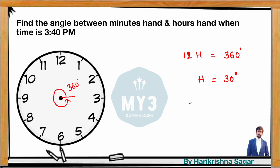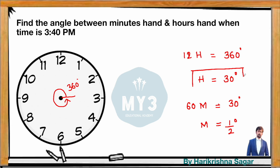One hour equals 60 minutes, so 60 minutes makes 30 degrees. Therefore, 1 minute makes 30/60 = half a degree. To summarize: 1 hour makes 30 degrees, and 1 minute makes 0.5 degrees.